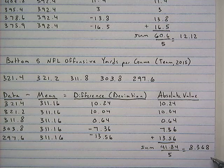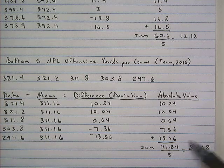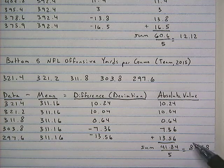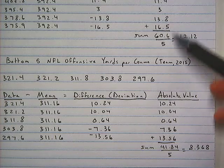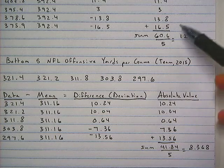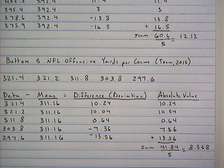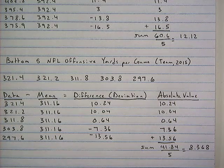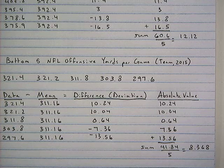So if we compare our two mean absolute deviations: for the top five teams it was 12.12, and for the bottom five teams it was 8.368. This means that the bottom five data is more condensed around the mean, whereas the top five value is more spread out.